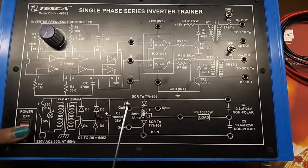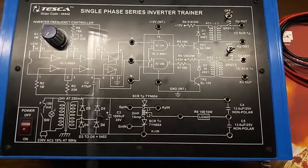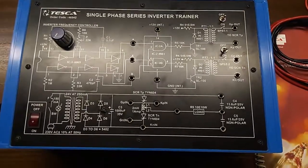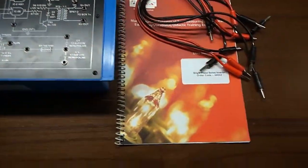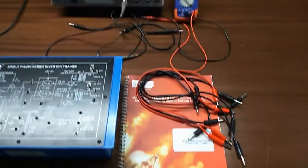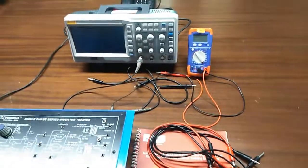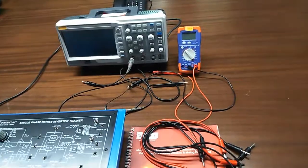This is the main switch to turn on or off the kit. This is the mimic diagram given on the trainer kit, and this is the user manual and patch cords. These are all included in this kit. To perform the experiments we will need a CRO and a multimeter.